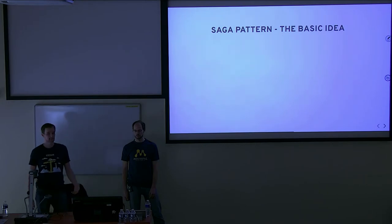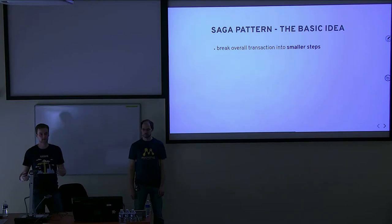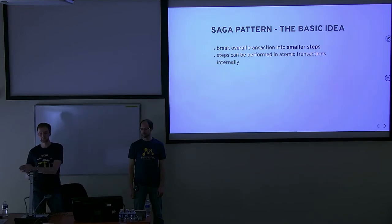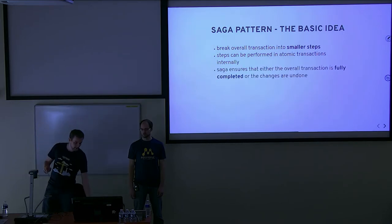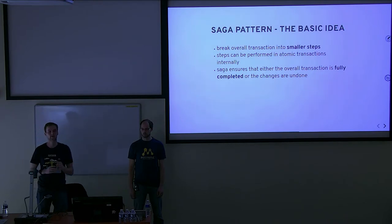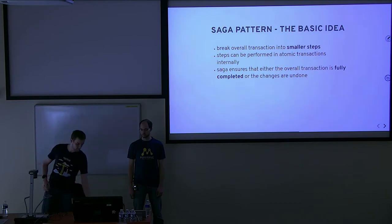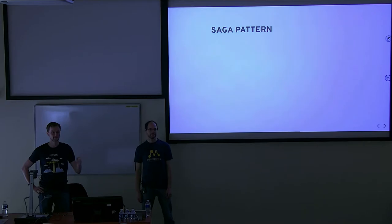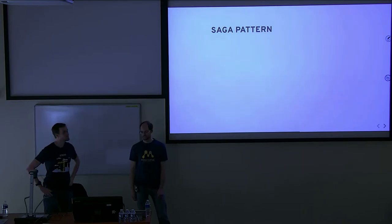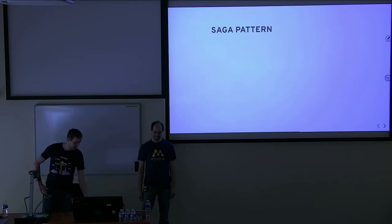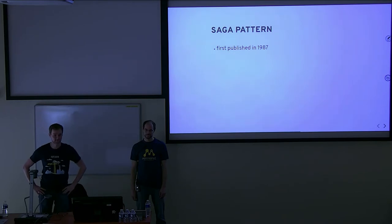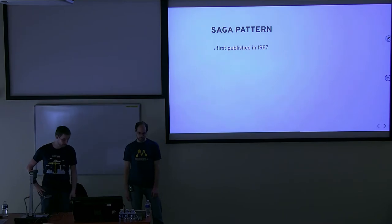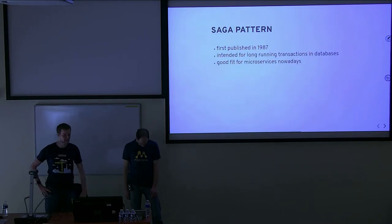To rephrase it: the basic idea is we break down the overall transaction into smaller steps. These steps can be performed in atomic transactions internally — they may or may not be, we don't really care. Saga ensures that either the whole thing completes fully or not at all. Who here has heard of the Saga pattern? It may be a surprise to some — it's not new. It was originally published in 1987, intended to solve an issue of long-running transactions in databases, and it's quite a good fit for microservices nowadays.